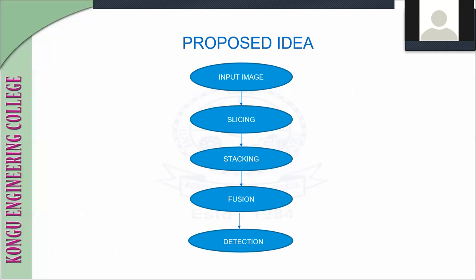The next slide will be explained by Poomundran. Proposed idea: the input images come from the user, after which the images are sliced using a slicing process. They are then arranged using stacking and a fusion technique, converting 2D images into 3D images. After that, we detect the brain stroke location.